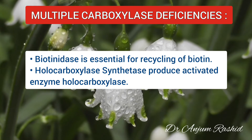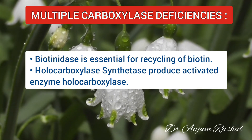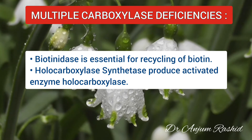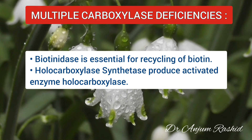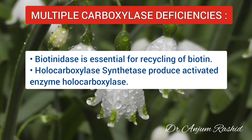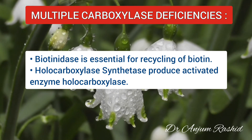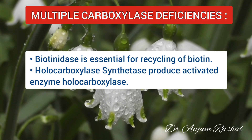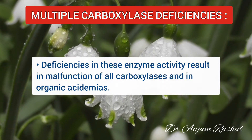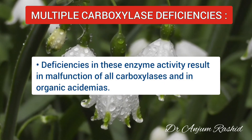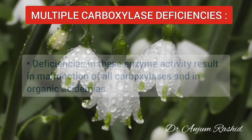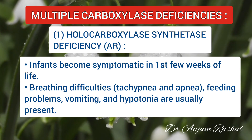In multiple carboxylase deficiency — a defect of the biotin cycle — two important enzymes are biotinidase and holocarboxylase synthetase. Biotinidase is found in serum and most tissues and is essential for recycling biotin in the body, while holocarboxylase synthetase catalyzes the binding of free biotin with apocarboxylase to produce the activated enzyme. Deficiency of either enzyme results in malfunction of all the carboxylases and thus in organic acidemia.